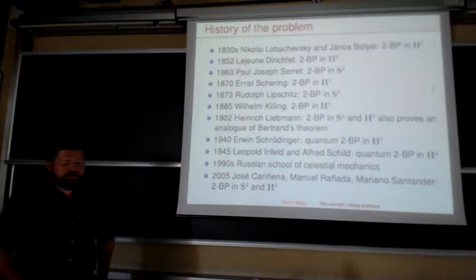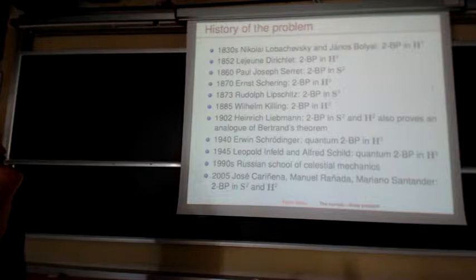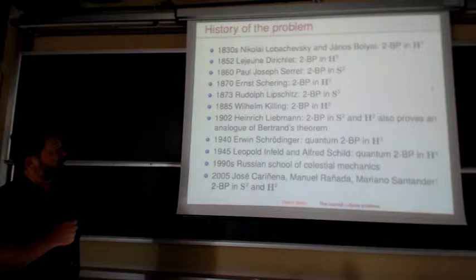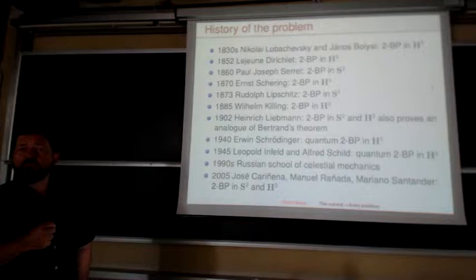Killing and Liebmann — Liebmann was a famous mathematician in geometry, actually a professor in Heidelberg and rector of the university before the Nazis came to power. He was Jewish, so they expelled him. He also died before the war started.